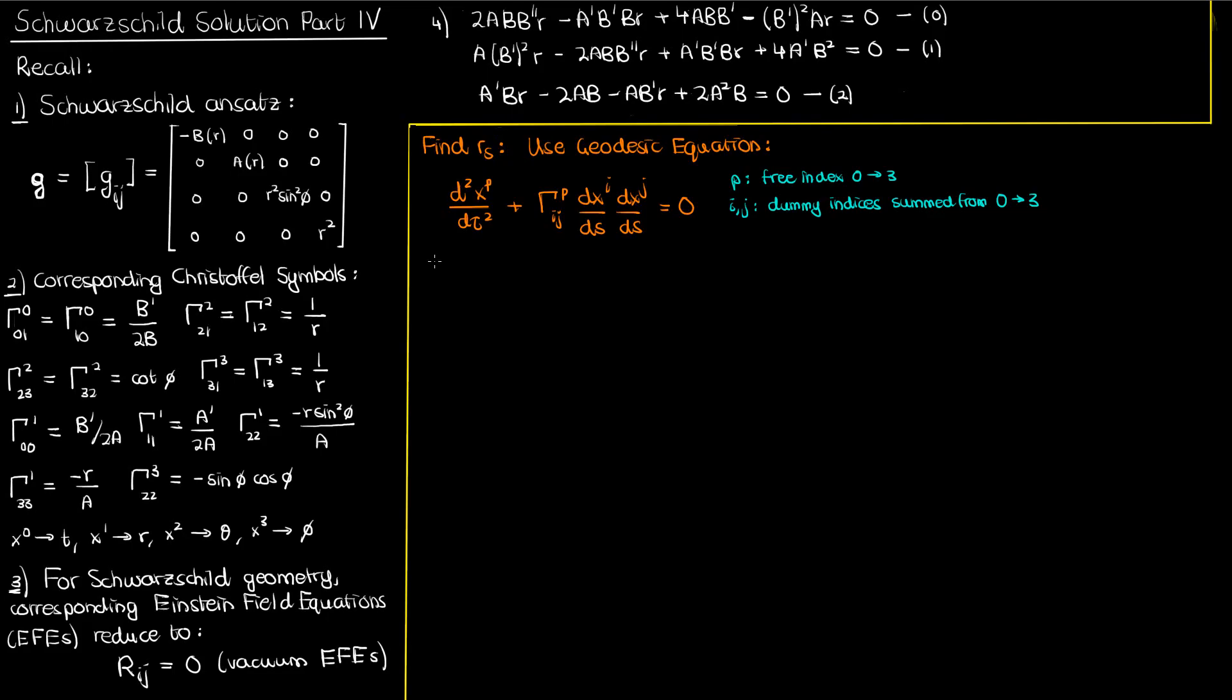If you solve these equations you'll be able to find the paths or the world lines or the geodesics that test particles would take in that particular spacetime geometry that's determined by these Christoffel symbols. Now S, if you remember, is the arc length parameter. This is the form of the geodesic equation that we get if we parameterize our world line with respect to arc length.